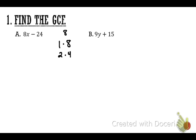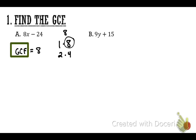Now look at step three — start with the largest number. Can this largest factor, 8, fit into both 8 and 24? Yes. That means that is our GCF. Circle that 8 — the GCF is 8.